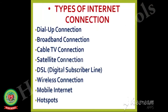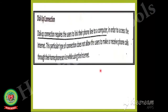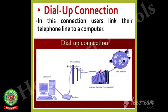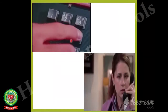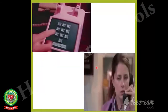Several types of internet connections exist that enable us to connect to the internet. The first type of internet connection is dial-up connection. In dial-up connection, users link their telephone line to a computer in order to use the internet. This particular type of connection does not allow the users to make or receive phone calls while using the internet.